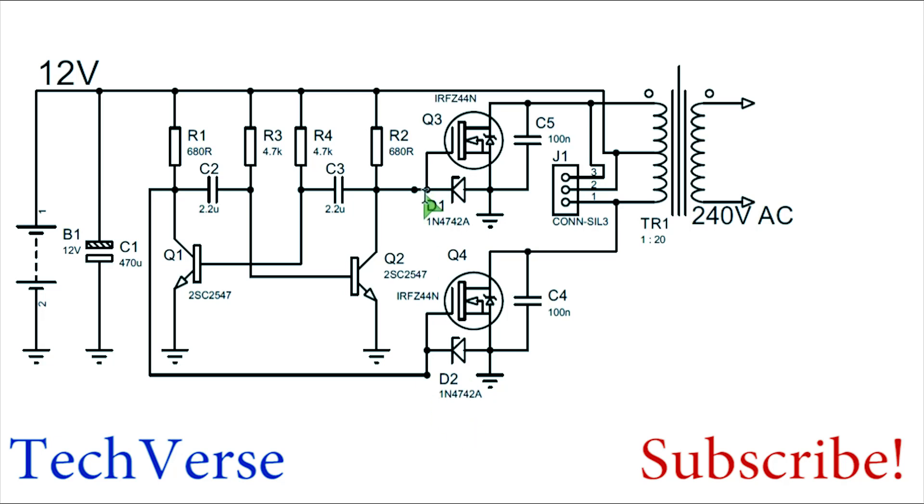Each MOSFET has a voltage regulation zener diode. They are rated for 12 volts connected across the gate and source. This protects the MOSFETs from any voltages above 12 volts at the gate and source, since depending on the MOSFET you're using it can blow your MOSFETs.